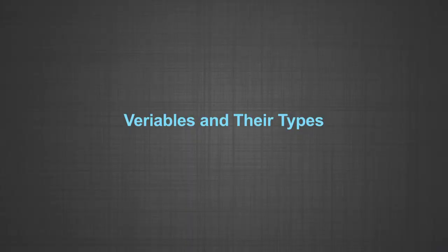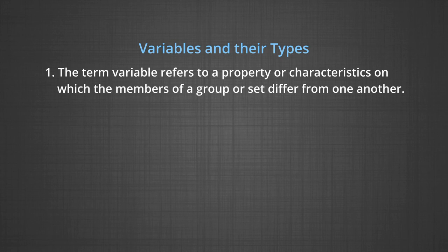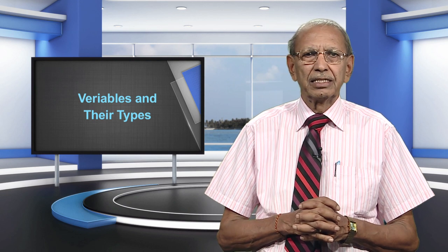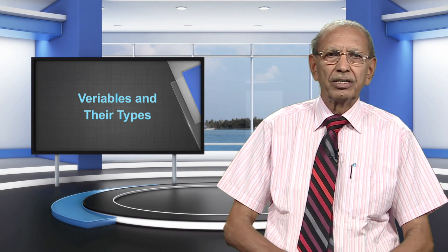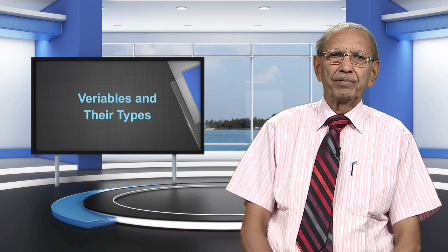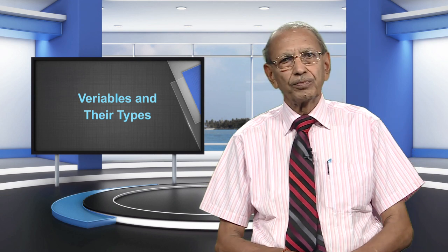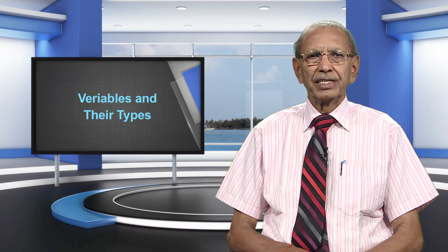Number 4: Variables and Their Types. The term variable refers to a property or characteristic on which the members of a group or set differ from one another. These properties can be sex, age, grade, height, weight, intelligence, attitudes, socio-economic status, and a host of other such factors. Opposed to the term variable is the term constant, signifying the condition that the members of a group do not differ among themselves on this property. However, a particular property may be variable in a specific situation and a constant in another. The property of sex in a mixed group of boys and girls is a variable, while in a group of boys only it is a constant. The particular values of a variable are referred to as variates or variate values.